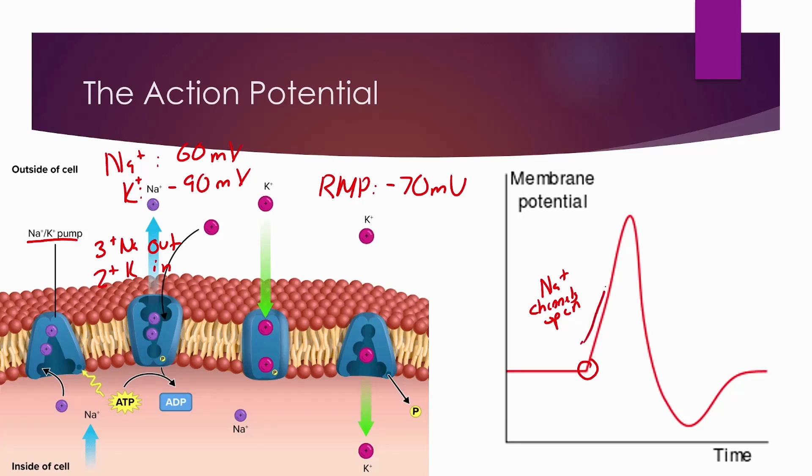Leading to a lot of depolarization. Once it reaches the peak right here, that's when the action potential is released. So, this entire part right here is reaching that threshold. And then, once the action potential is fired, if there's no more subsequent stimulus, it'll start to repolarize.